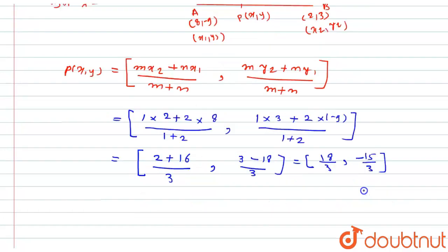Further solving these coordinates, I will get the coordinates of P(x, y) equal to (6, -5).